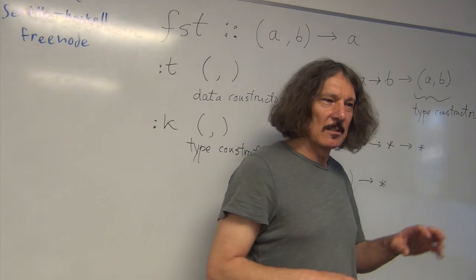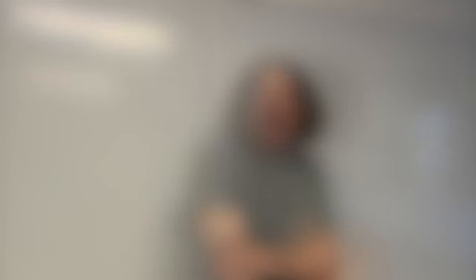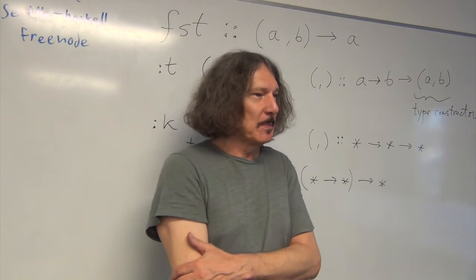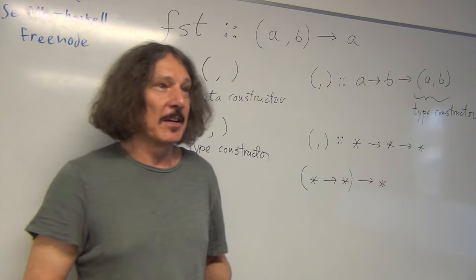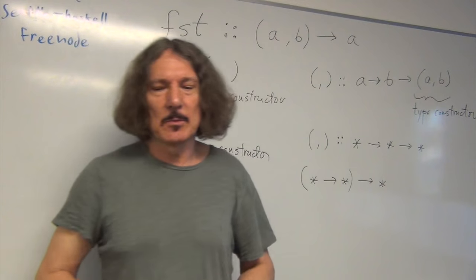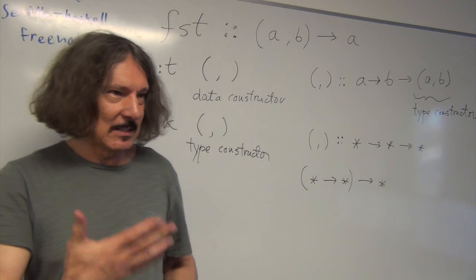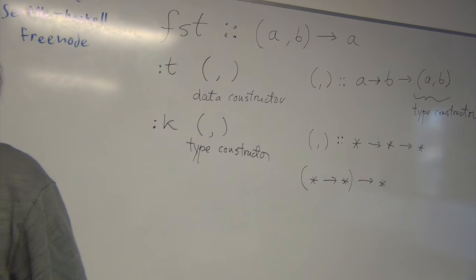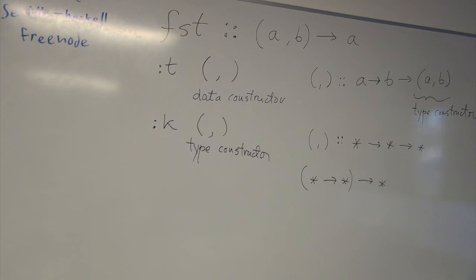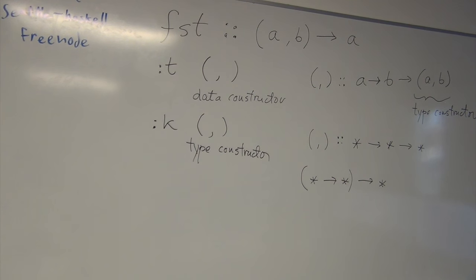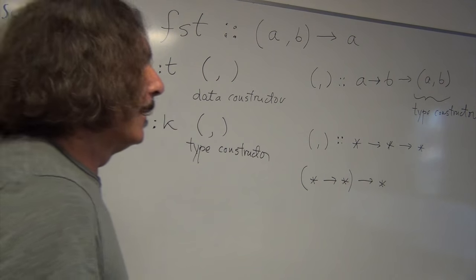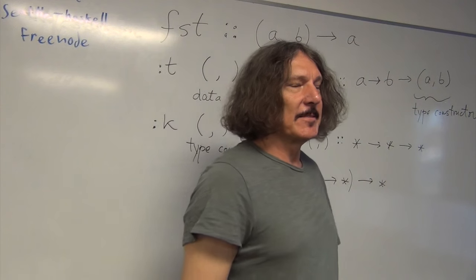We don't usually use kind signatures, but it's possible. Just like we have type signatures, we can have kind signatures. In some very complex type calculations we can explicitly use kind signatures to tell the compiler what we mean if it doesn't follow directly from the context. Now let's talk a little bit about laziness.